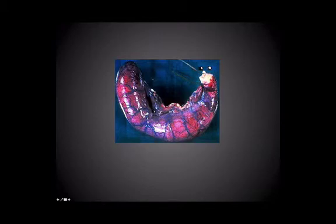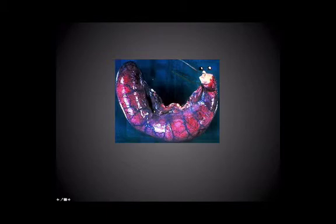We're not yet seeing much of the migration of the polymorphs, in that the vessel changes obviously usually precede the cellular changes. The vessels alter and then allow the polymorphs to start migrating. So this is an early, congested appendix, but left a few more hours or days, and certainly the surface of the appendix will then start to show the cell migration.